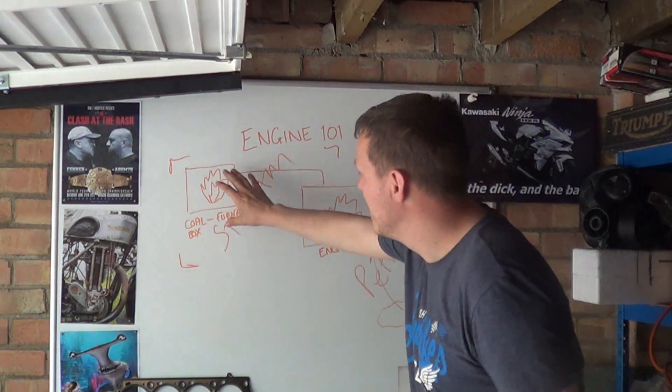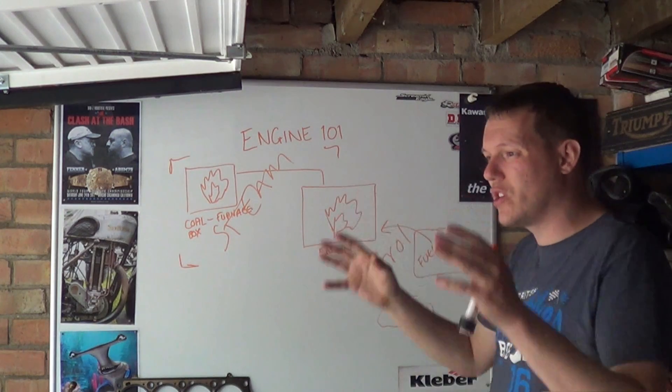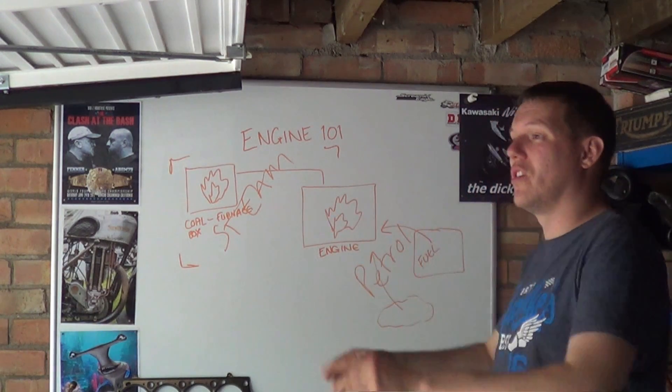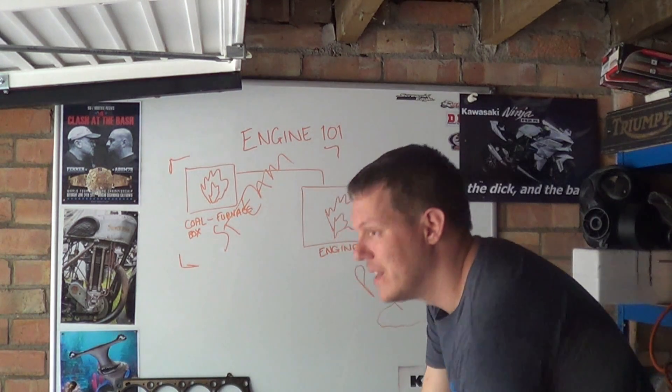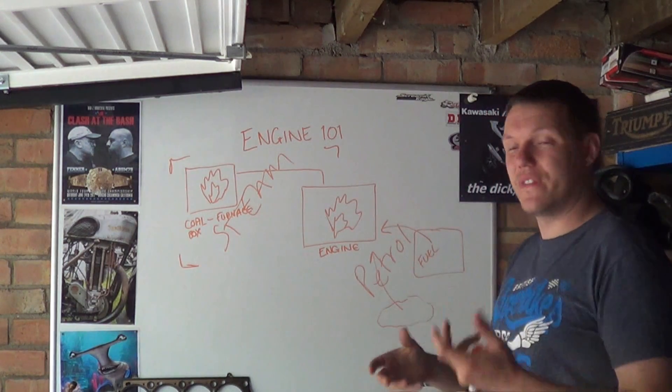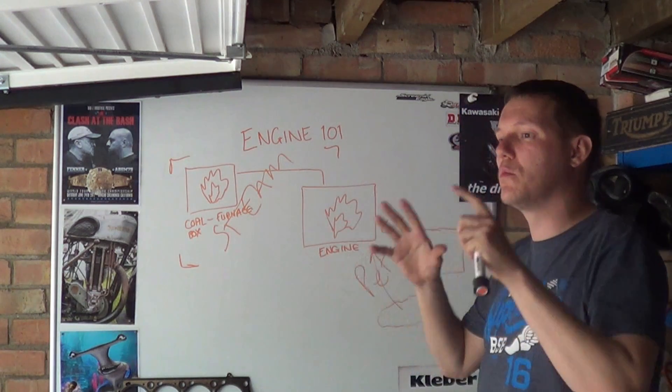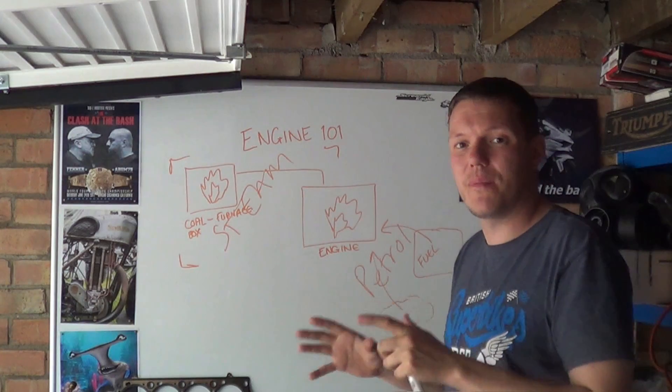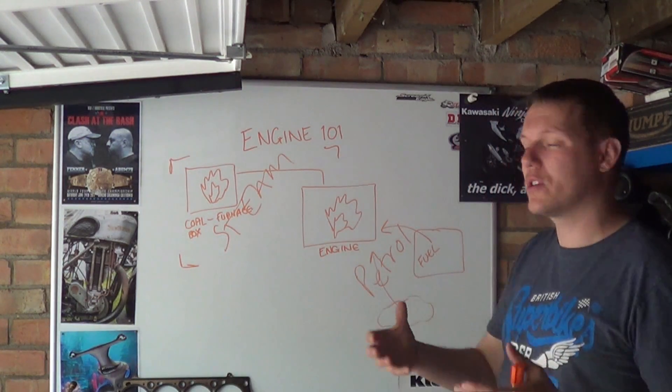So the combustion takes place where the work is extracted. Where with a steam engine, the combustion is external to the actual engine, what we actually call the engine. Now you might sit around and say the whole thing's called a steam engine. That's just what people call it. When we're talking about engineering and physics, this is the actual engine where in that volume where the actual work is extracted from that energy production or that energy release, so to speak. I don't want to say the word production because that's wrong.